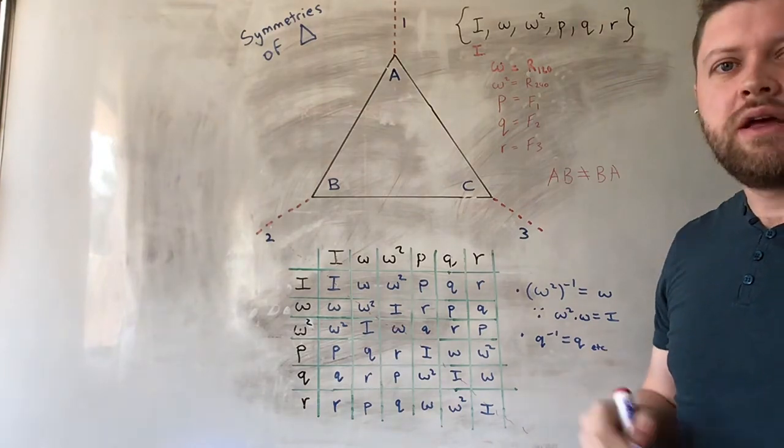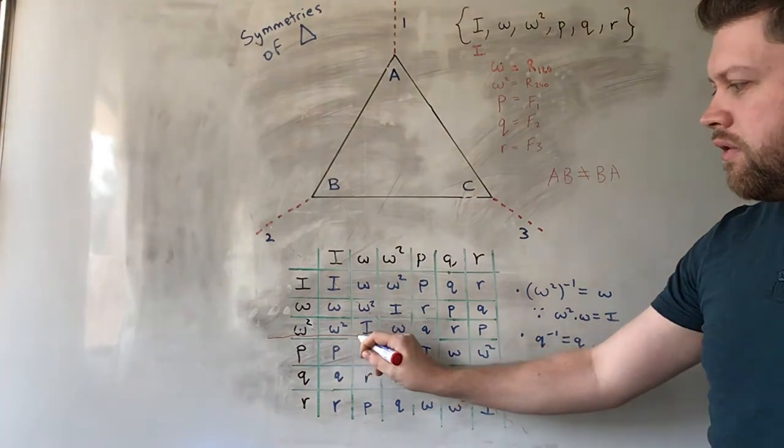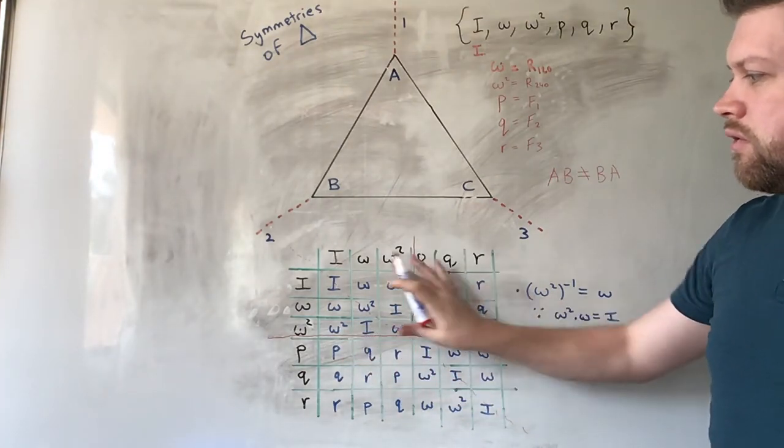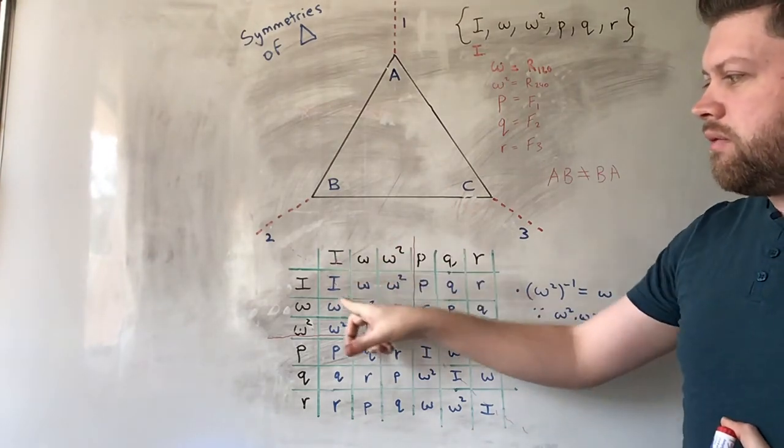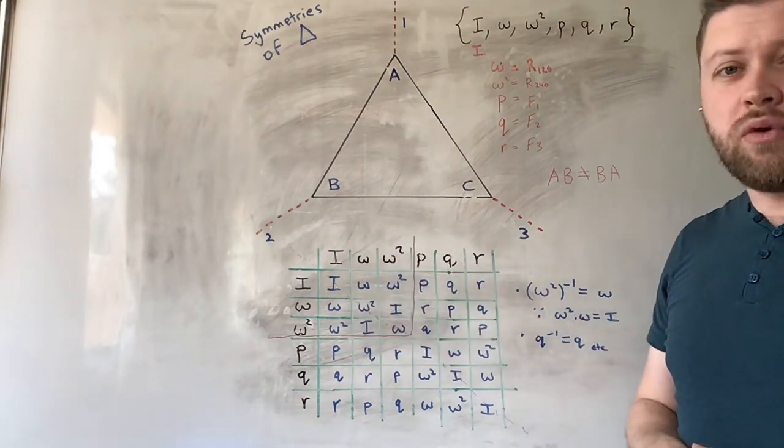And finally, I would just say that if you block off this part of the group, this corner in the top left, these are the rotation operations on their own. They actually form a subgroup.